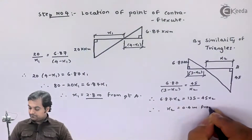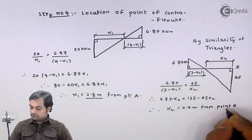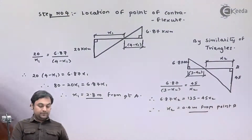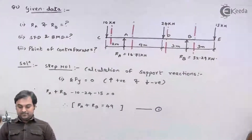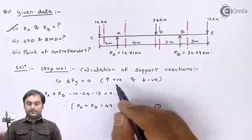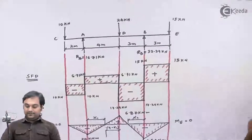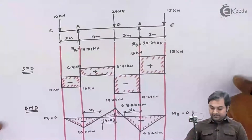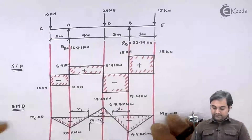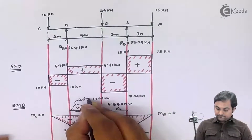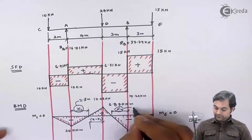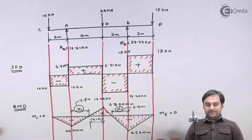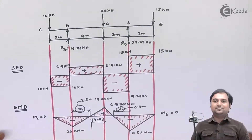In this problem, we have solved all three questions: reaction at A, reaction at B — already calculated — the shear force diagram and bending moment diagram — completed — and the last part, the point of contraflexure. The first point x1 is at 2.8 meters from A, and the second point x2 is at 0.4 meters from B. With the points of contraflexure located, the problem is complete.